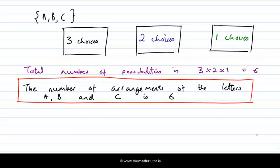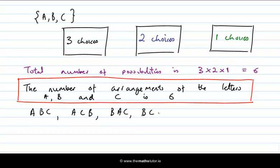Just to reinforce this, let's write down all six arrangements of A, B, C. We can list them systematically, starting with all arrangements that begin with A: A, B, C and A, C, B. Then the ones beginning with B: B, A, C and B, C, A. And finally the ones beginning with C: C, A, B and C, B, A. Those are the six possible arrangements of the three letters.